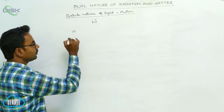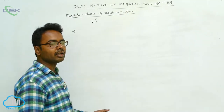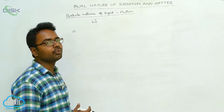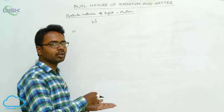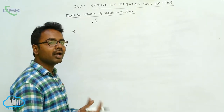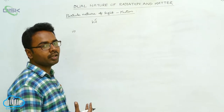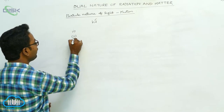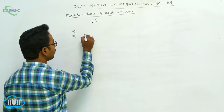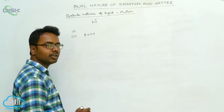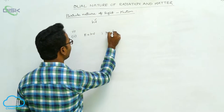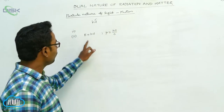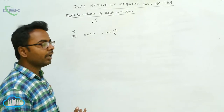When radiation interacts with matter, it interacts as if it is made up of particles called photons. Every photon has energy equal to h nu, as well as momentum equal to h nu by C.